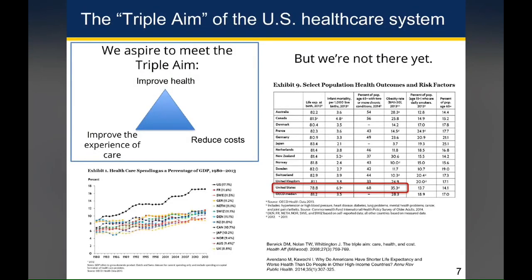The three aspects of the triple aim of the US healthcare system are improving health, improving the experience of care, and reducing costs. Although we aspire to achieve those three aims within the US healthcare system, we're clearly not there yet. If you look at the amount of money we spend and population health outcomes like infant mortality, we're among the most expensive healthcare systems out there, and not among the top when it comes to these population health measures.